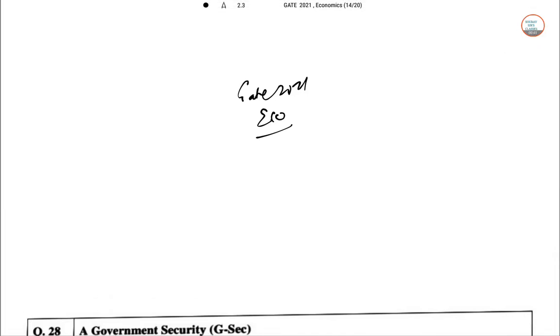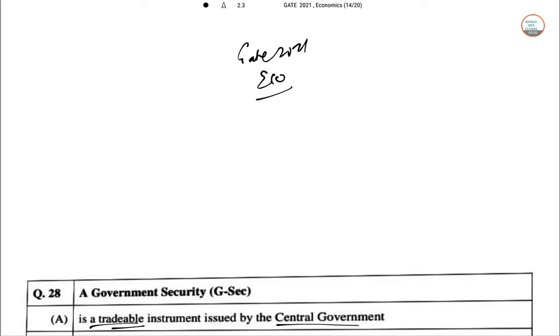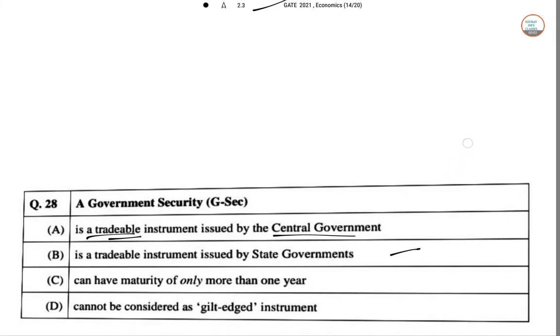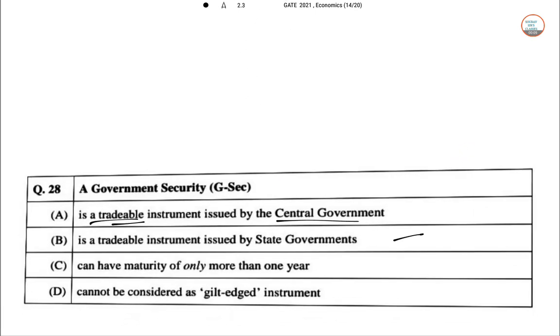Welcome to Shourses classes. This video is of GATE 2021 Economics solution. The first question is about Government Securities (G-Sec). Is it a type of instrument issued by the central government? Yes, also state can do it. Can it have maturity of only more than one year? No, there are very different kinds of maturity here, so this is wrong. These two are correct. Remember that here multiple options can be true. Can be considered as a gilt-edged instrument? That is also wrong. So Q28 answer is A plus B.